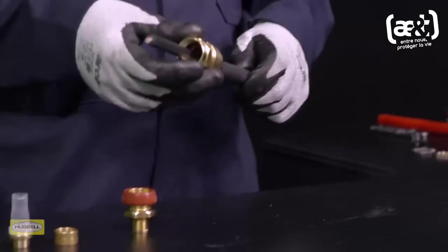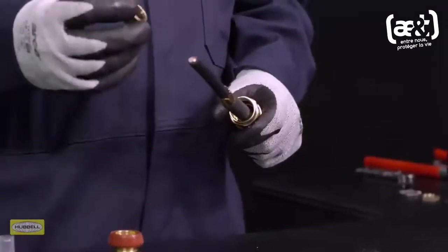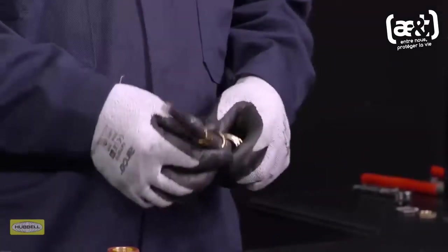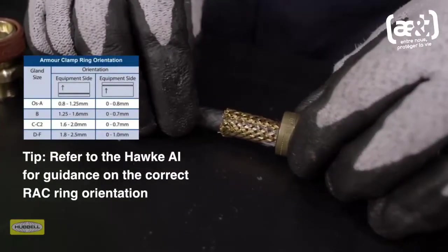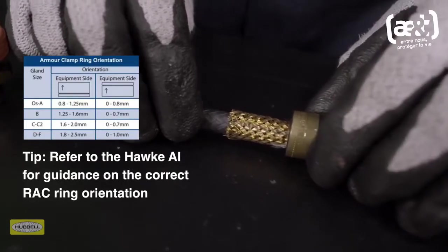Slide the back nut, middle nut, and armor clamping ring onto the cable. Ensure that the orientation of the reversible armor clamping ring is correct, with the arrowhead indicating the correct armor braid or tape pointing to the equipment.